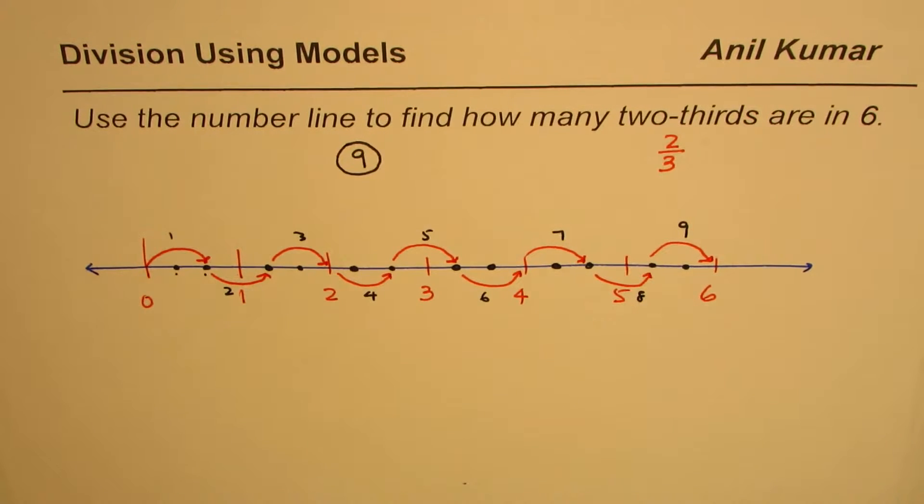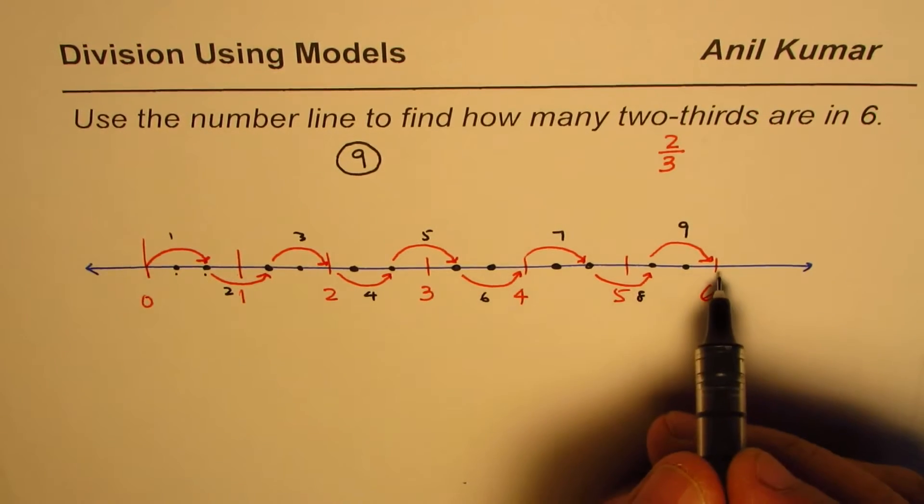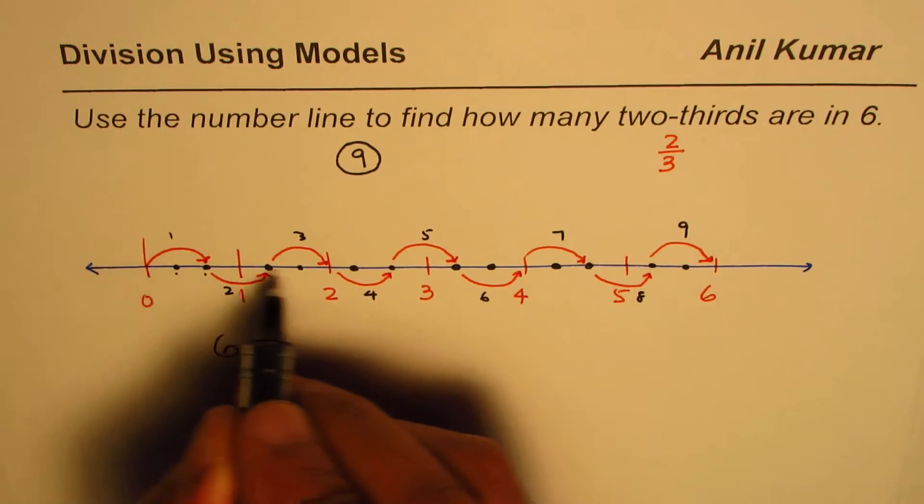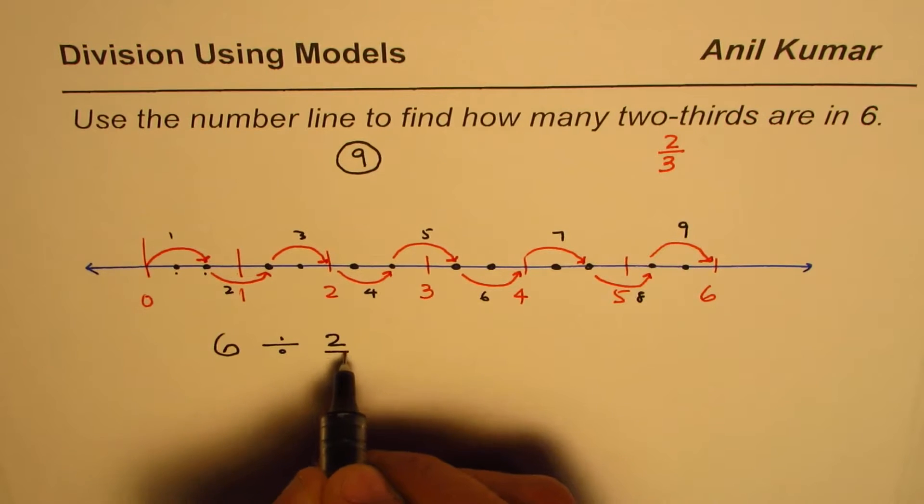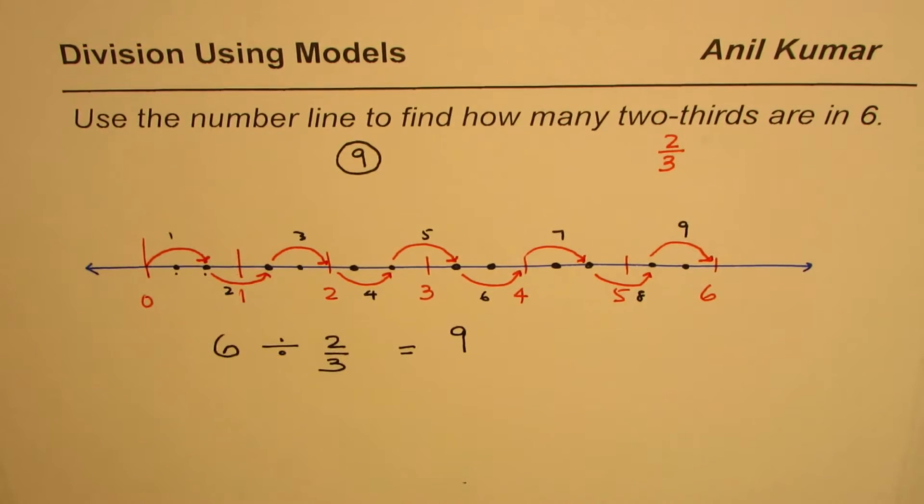So we can say that we could get 9 two-thirds are there in 6. So basically what we did was we had a number line with 6 units, and we divided them equally into two-thirds. Do you see that? And what we got was 9. That is what we did.